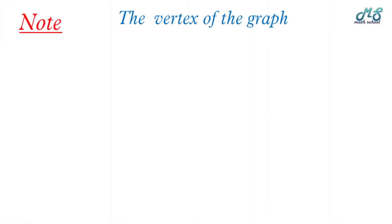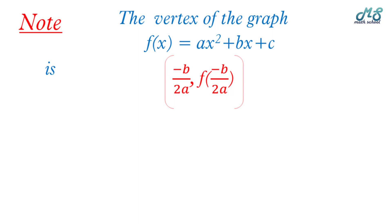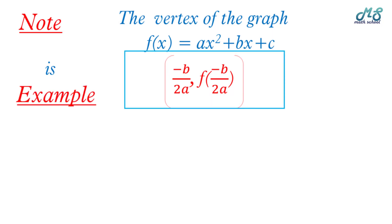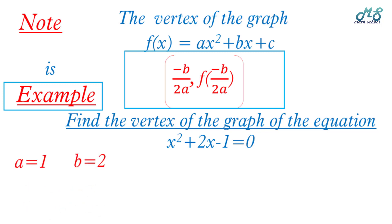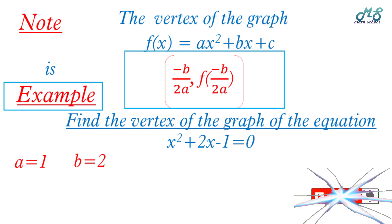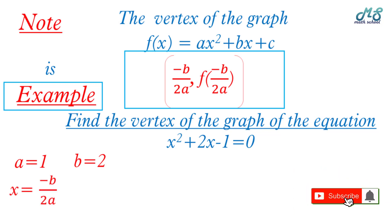Note: how to find the vertex of the graph of f of x equals ax squared plus bx plus c. The x-coordinate of the vertex is negative b over 2a. Then find the y-coordinate by computing f of negative b over 2a. For example: find the vertex of x squared plus 2x minus 1 equals zero. Here a equals 1 and b equals 2, so the x-coordinate is negative 2 over 2 times 1, which equals negative 1.